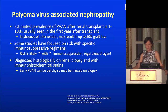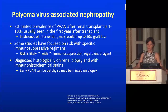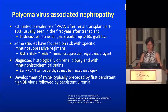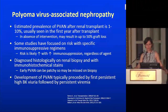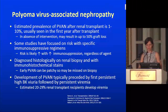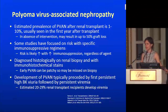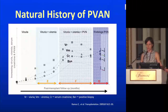Development of polyomavirus-associated nephropathy is typically preceded first by high-grade BK viruria and then viremia. An estimated 20 to 29% of renal transplant patients will develop viremia, but not all will go on to develop nephritis — that's what's hard about this particular virus. So more people get viruria, then progress to viremia, then to nephropathy. The best-studied treatment for polyomavirus-associated nephropathy is reduction in immunosuppression — that is the key thing to remember.